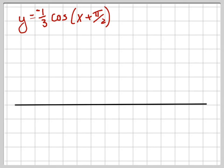Let's do a cosine graph now. Y equals negative one-third cosine x plus pi over two.